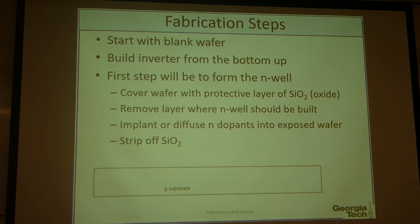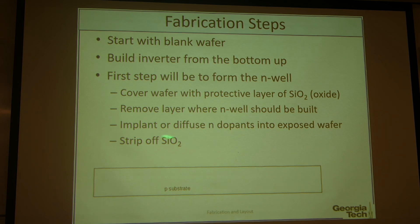Let me begin from the very beginning. We start with the silicon blank wafer and we build the inverter from the bottom to the top side — we call it the bottom-up process. First, we make an N-well junction.